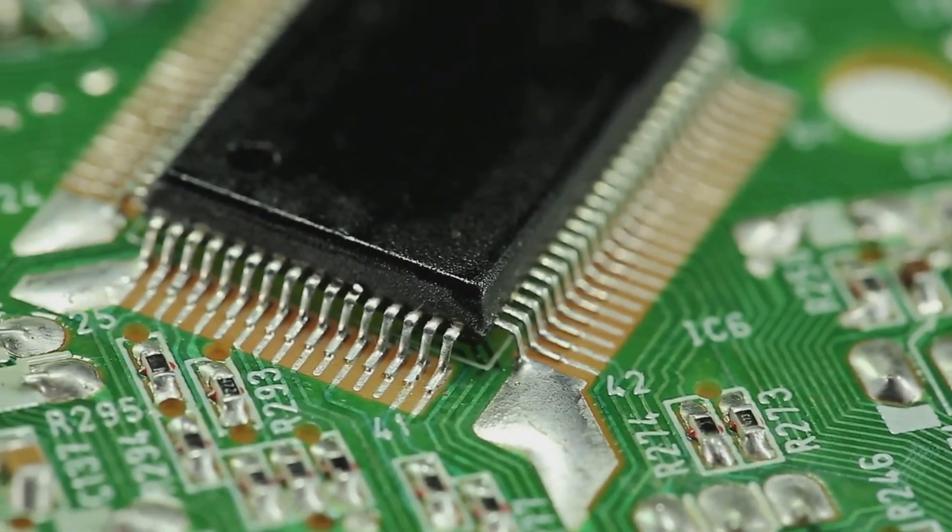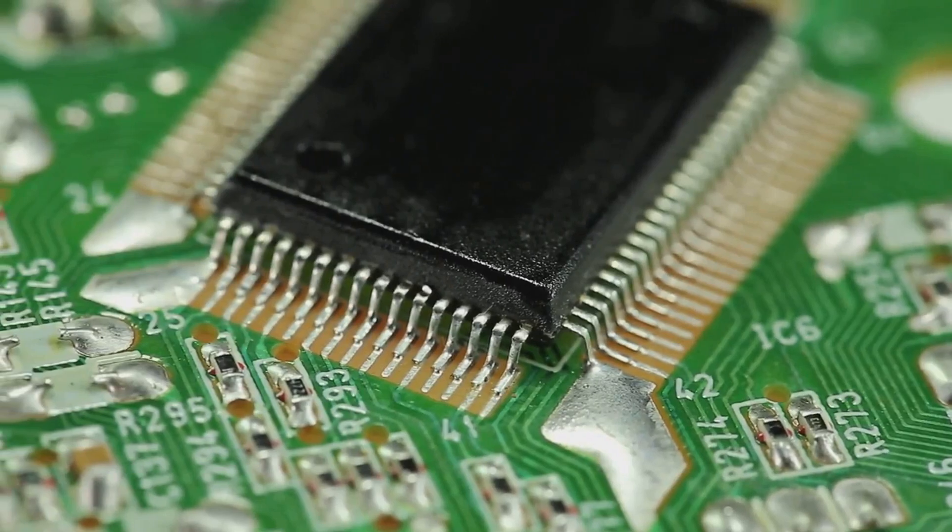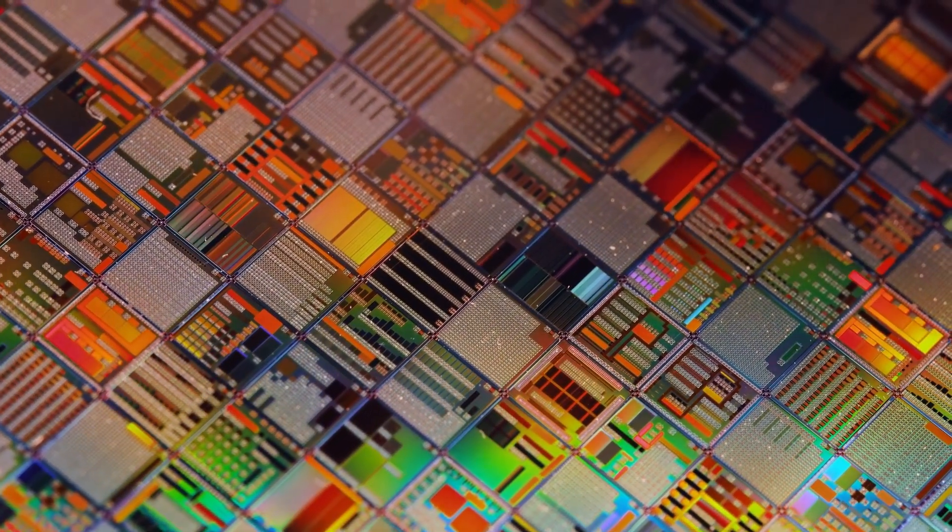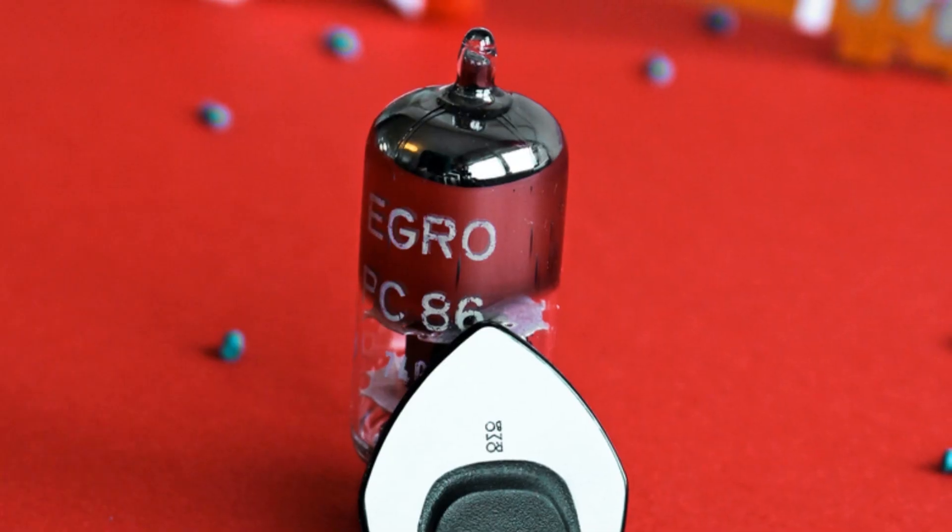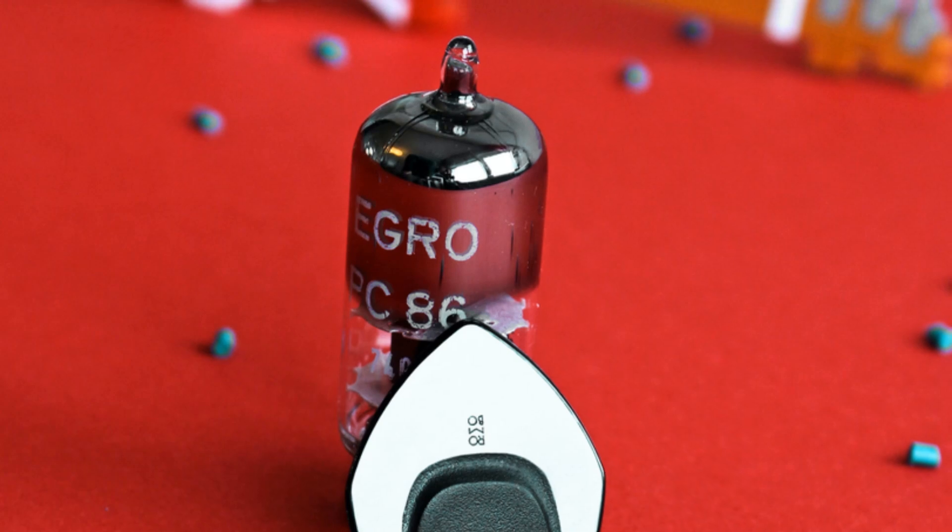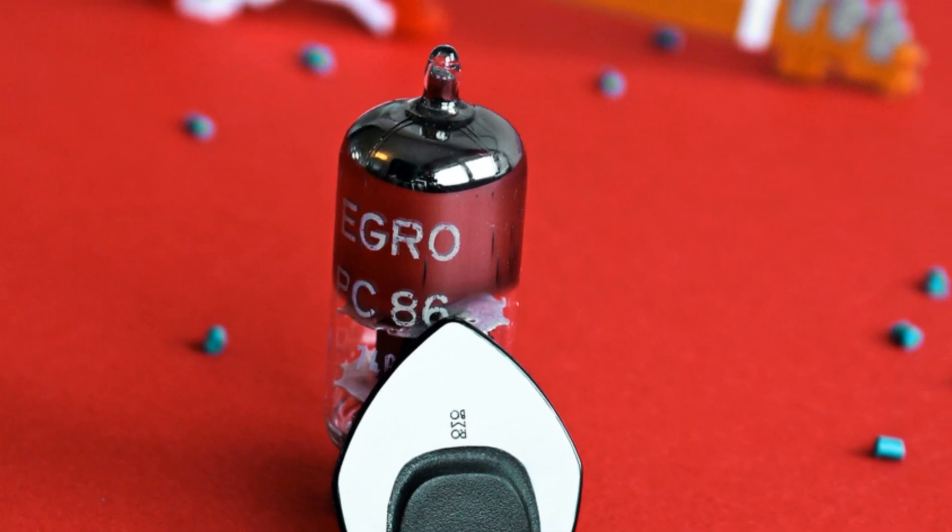Diodes, in their modern form, are semiconductor devices. They are typically made from materials like silicon and germanium. The key to a diode's functionality lies in its unique structure, the P-N junction.